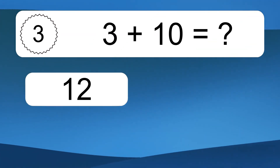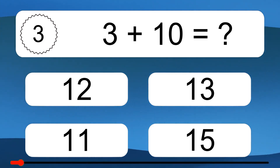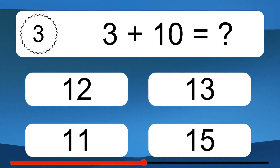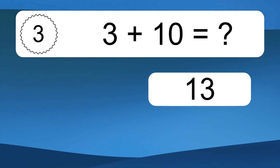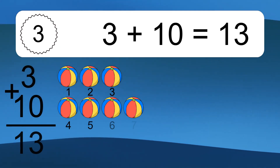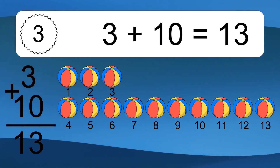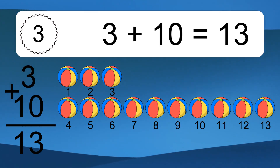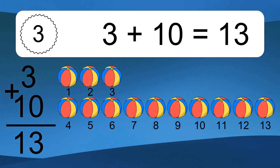3 plus 10 equals what? 3 plus 10 equals 13. Let's count it: 1, 2, 3, 4, 5, 6, 7, 8, 9, 10, 11, 12, 13.